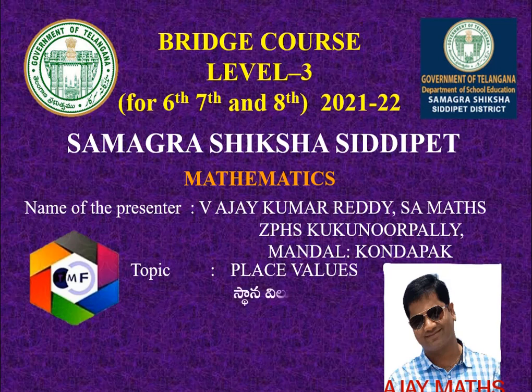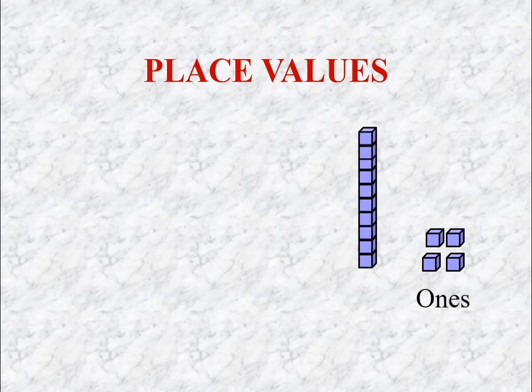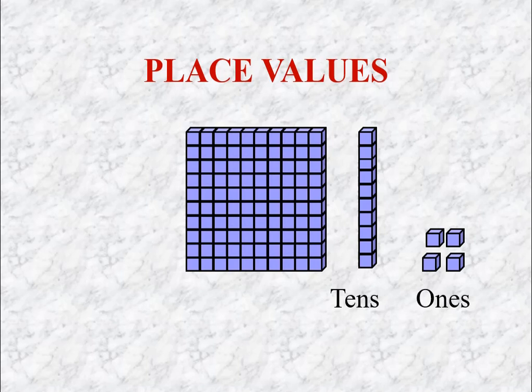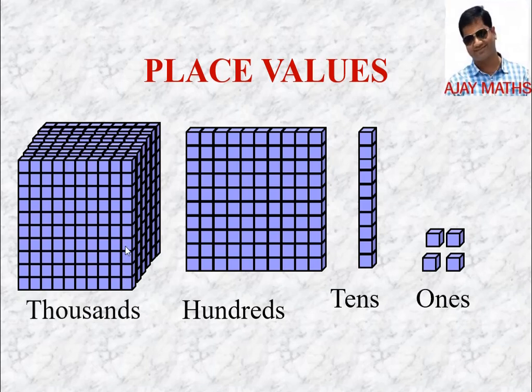Manam iroju neechkune amsham stana vilu vadum. Okay students, see this place values chart. These are indicating ones here and these ones combinedly together form 1 ten. This 10s place and these 10s combinedly together form 100s. Remember and note all this and try to answer the next one.